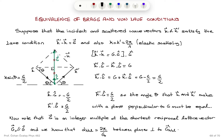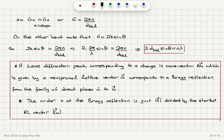We noted that g over 2 equals k prime dot g-hat, so g equals 2k sine theta. Therefore, 2k sine theta equals 2πn divided by d_hkl. Substituting k equals 2π over lambda gives 2 times 2π over lambda times sine theta equals 2π times n over d_hkl, which simplifies to 2d sine theta equals n lambda — the Bragg law.